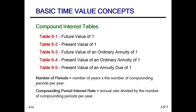The way I remember the difference is that D comes before O. So if it's an annuity due, it comes at the beginning of the period. An ordinary annuity comes at the end of the period.